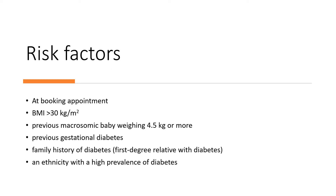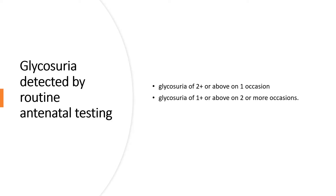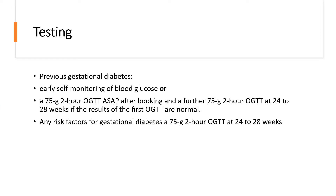Risk factors at booking appointments — screen every patient who books. These include: BMI over 30, previous macrosomic baby weighing 4.5 kg or more, previous gestational diabetes, family history of diabetes (first-degree relative), and ethnicity with a high prevalence of diabetes. Regarding glycosuria detected by routine antenatal screening: glycosuria of 2+ or above on one occasion, or glycosuria of 1+ or above on two or more occasions, should prompt referral for diabetes testing in pregnancy.